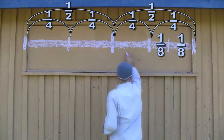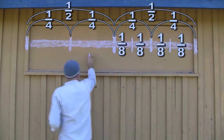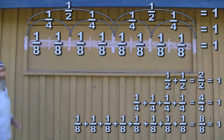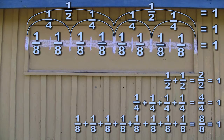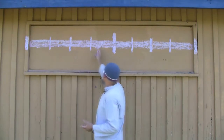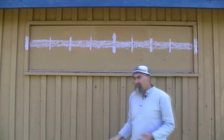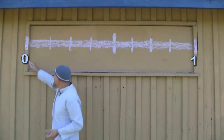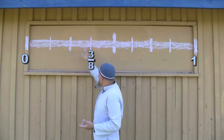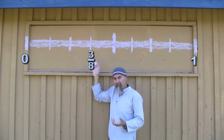We broke this line into eight different pieces — one, two, three, four, five, six, seven, eight. If we have a coordinate system and this happens to be zero, then three-eighths would be pieces one, two, three — right here — because we went down three of the eight pieces: three parts of the whole.